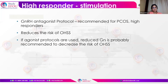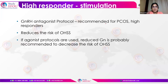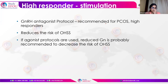When to use which protocol is very important — individualisation of protocol is key. For high responders — women with PCOS, high AMH, or young women — who are at risk of OHSS, the gonadotrophin antagonist protocol is the preferred method. To reduce the risk of OHSS, the antagonist protocol is recommended. If using an agonist protocol, a reduced dose of gonadotrophin is recommended to reduce OHSS risk. For normal responders, a GnRH antagonist protocol is also recommended, aiming for an OHSS-free clinic.